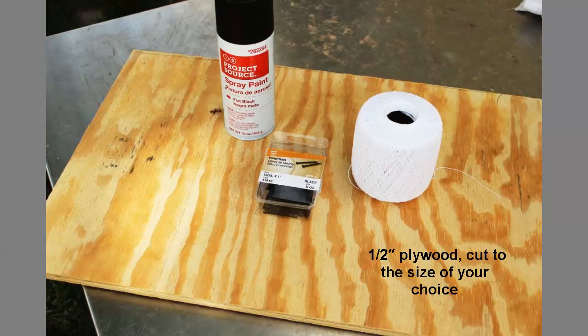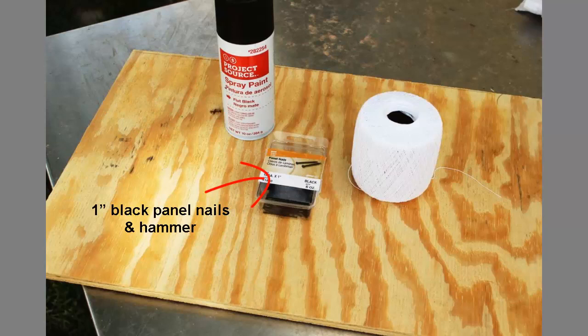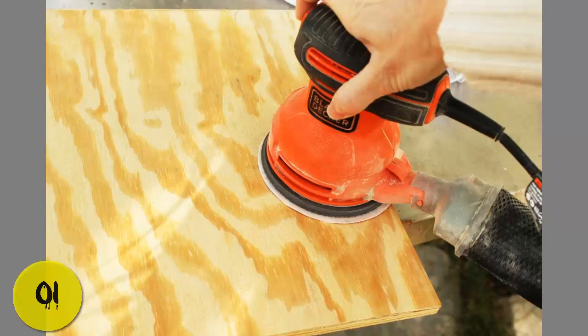Materials needed: one half plywood cut to the size of your choice, black matte flat spray paint, one black panel nails and hammer, white cotton string, parchment paper plus pencil.